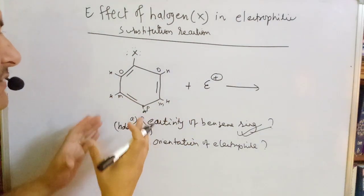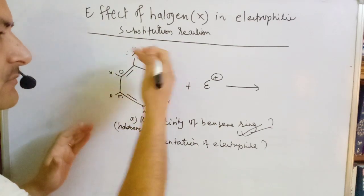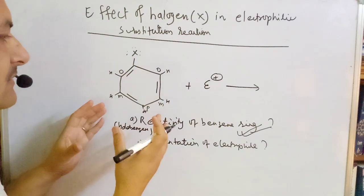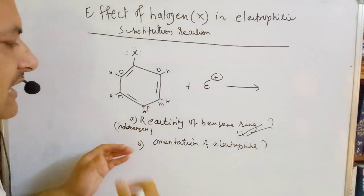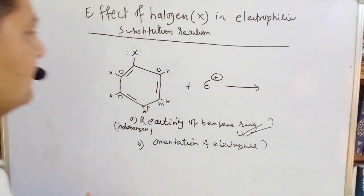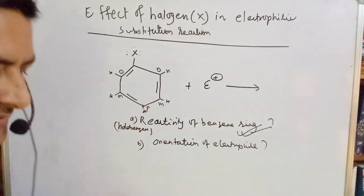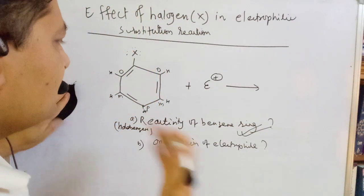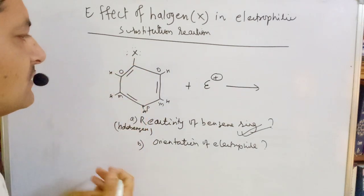We will now discuss halobenzene — specifically chlorobenzene. Halobenzene shows ortho orientation, and this is a unique case because it has two different effects.